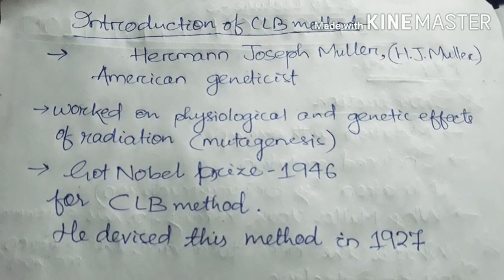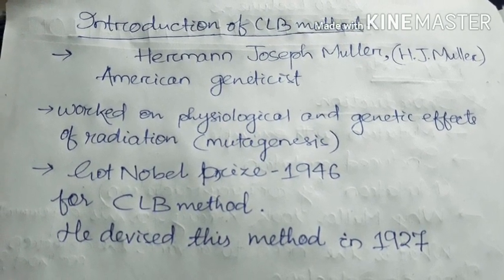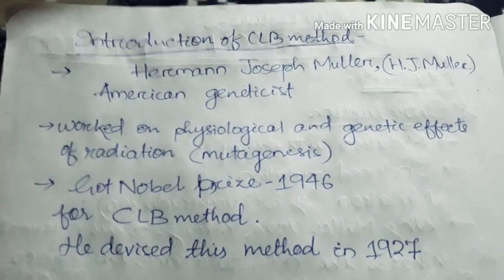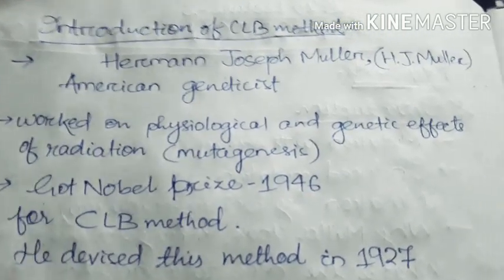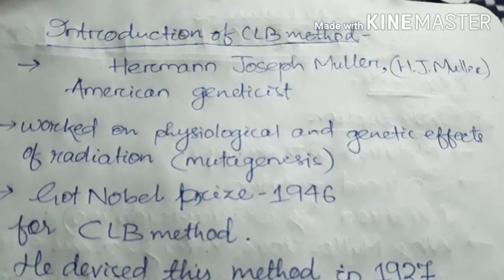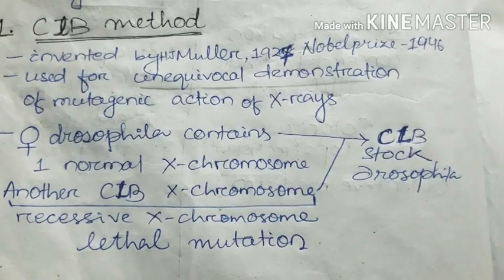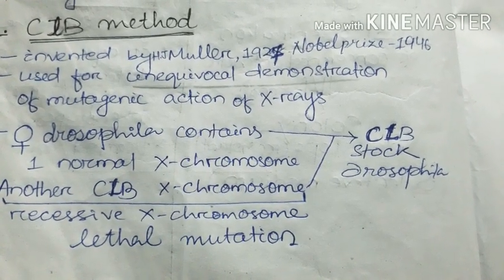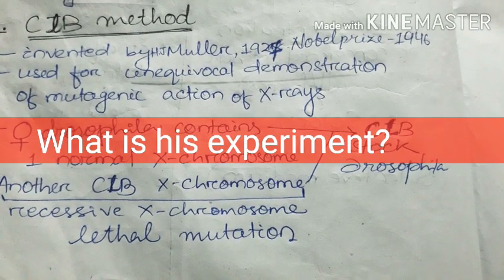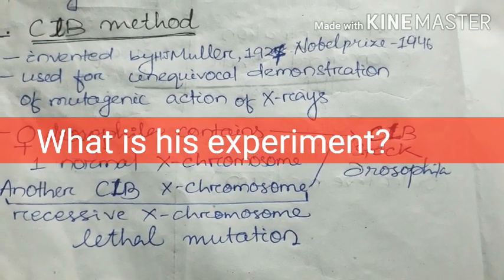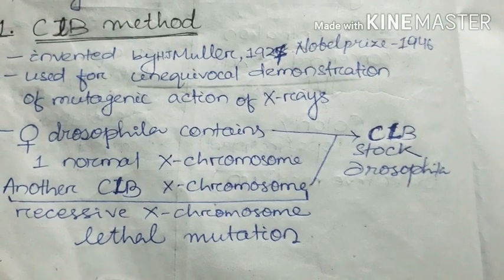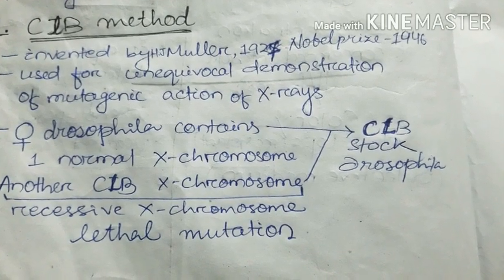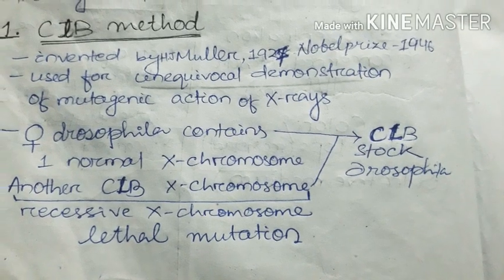He devised — meaning planned — this method in 1927, and he got the Nobel Prize for this in 1946. So this method is very, very important. In 1927, H.J. Muller invented the CLB method, and in 1946 he got the Nobel Prize for this. He used unequivocal demonstration for the mutagenic action of X-rays — unequivocal means clear, and demonstration means the evidence.